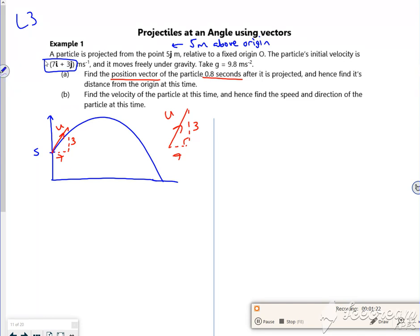So let's look vertically then. So remember up is my positive so gravity is going to be negative. So I want to find the position when t is 0.8. So s I want to find, u vertically is 3.